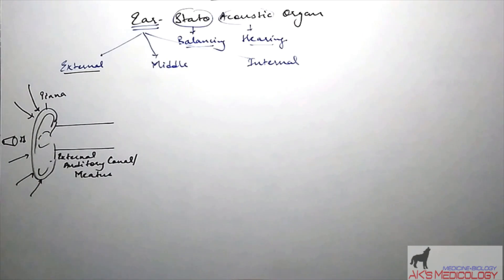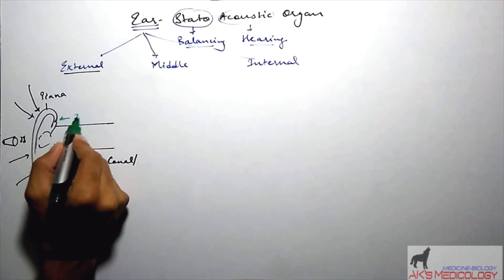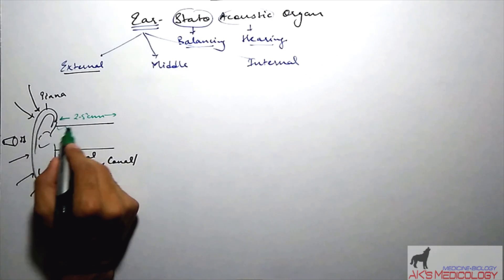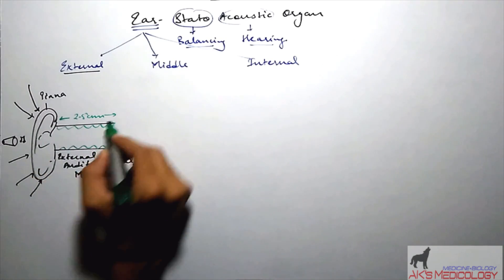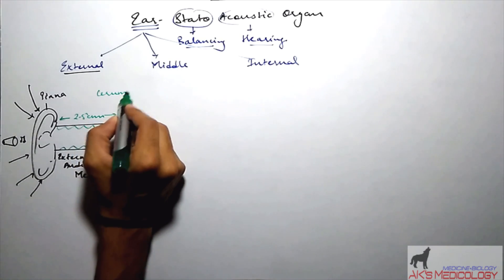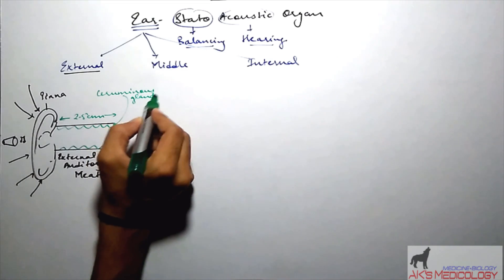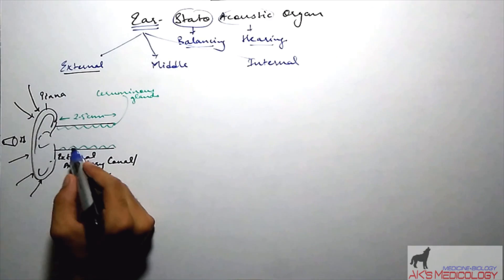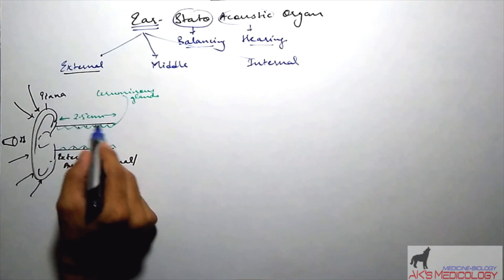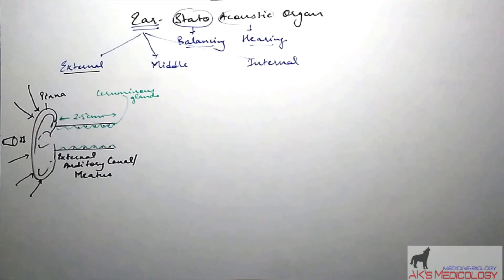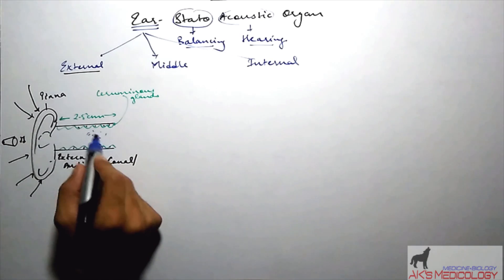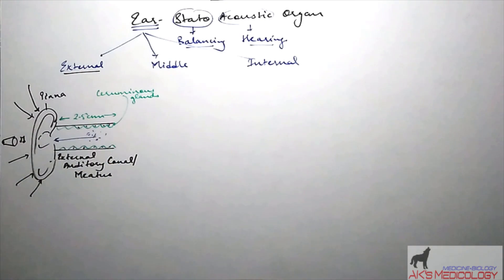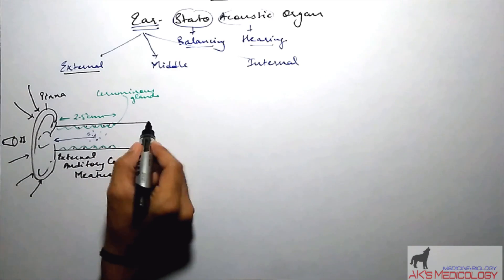The external auditory canal, also known as external auditory meatus, is a canal about 2.5 cm in length. It contains ceruminous glands, which are so called because they secrete cerumen. These glands are modified sweat glands. Cerumen is a sticky substance to which microorganisms and dust particles attach. Through jerky movements of the mandible or temporomandibular joint, the cerumen falls off and can be easily removed from the ear. The external auditory canal thus performs a function of immunity.